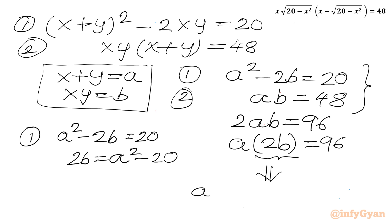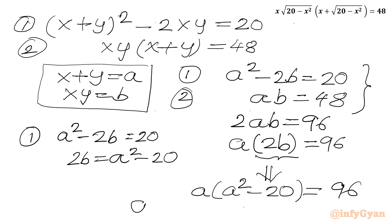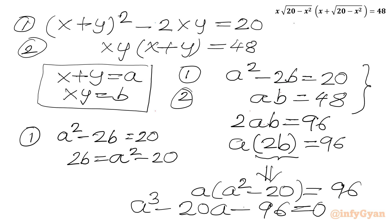Substituting into equation 3: a times (a squared minus 20) equals 96, which gives us the cubic equation a cubed minus 20a minus 96 equal to 0.